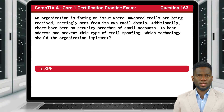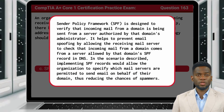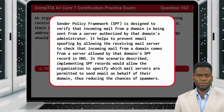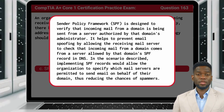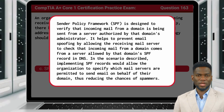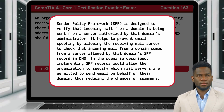The answer is C: Sender Policy Framework, or SPF. SPF is designed to verify that incoming mail from a domain is being sent from a server authorized by that domain's administrator. It helps to prevent email spoofing by allowing the receiving mail server to check that incoming mail from a domain comes from a server allowed by that domain's SPF record in DNS. Implementing SPF records would allow the organization to specify which mail servers are permitted to send email on behalf of their domain, thus reducing the chances of spoofing.